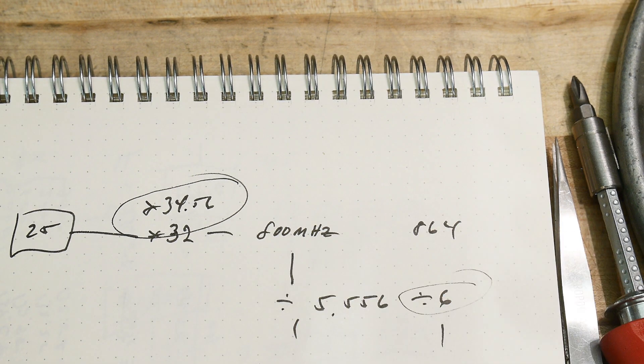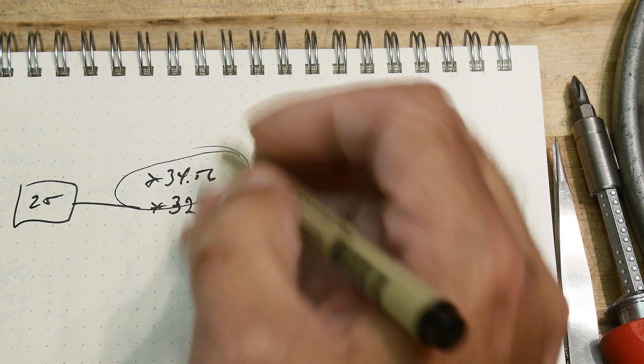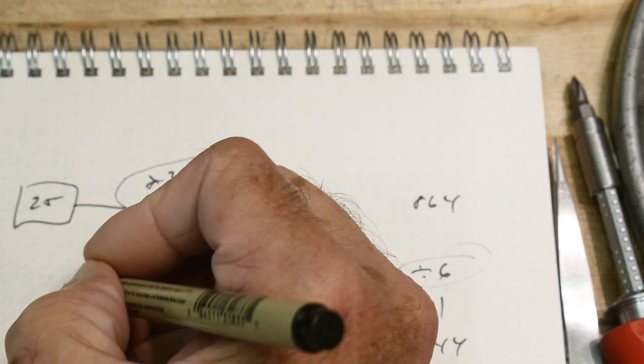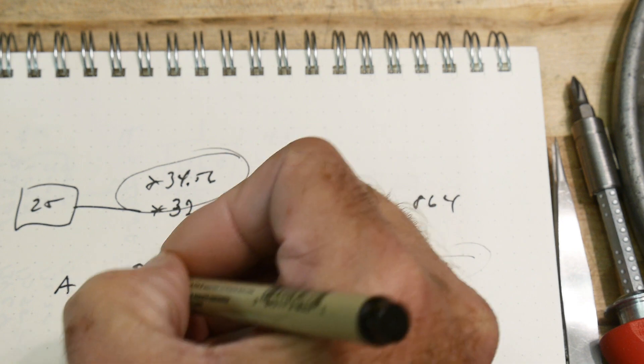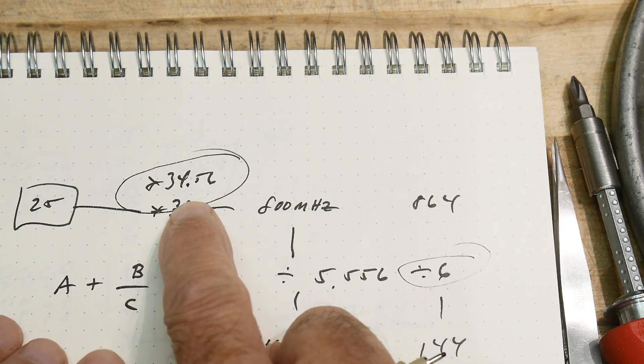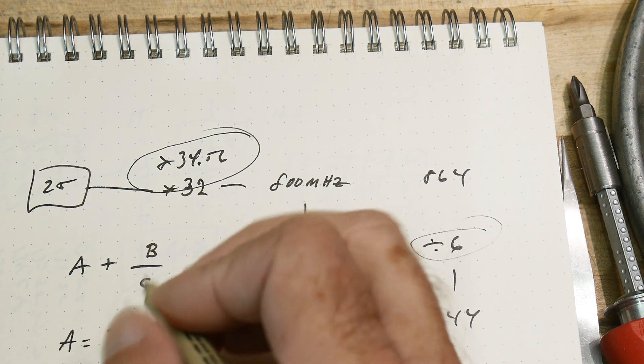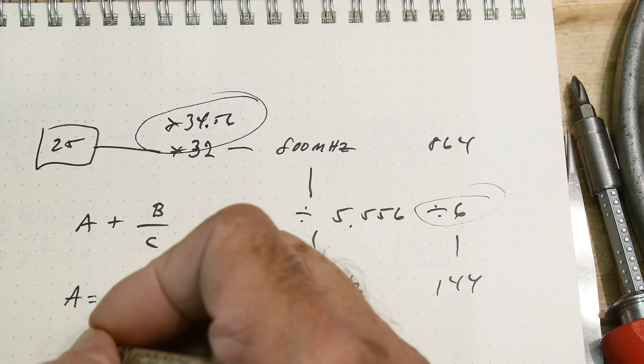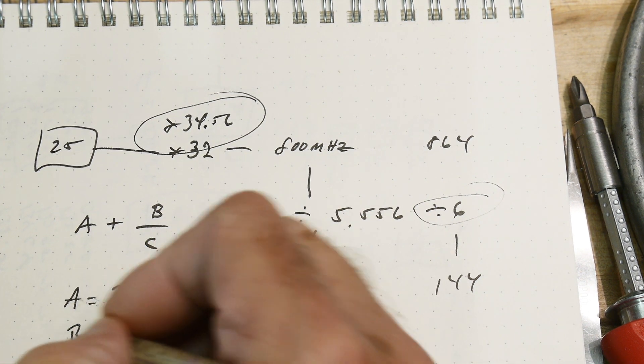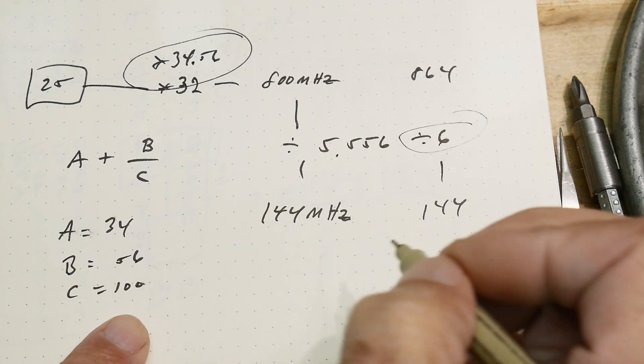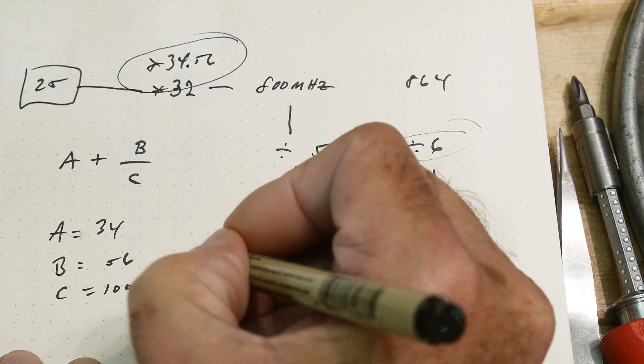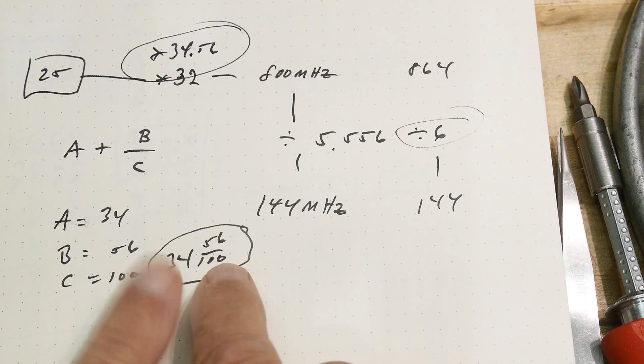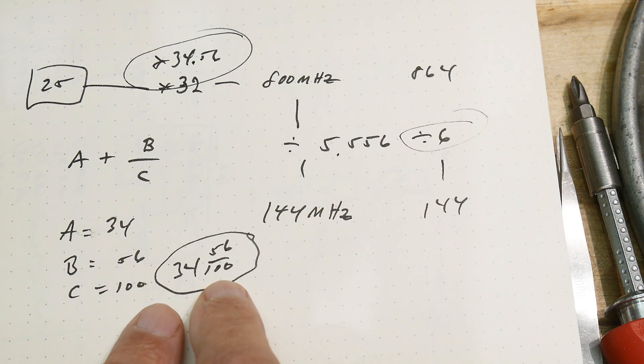Now, the way these chips work is they have registers, and the registers are not floating point registers, so you can't enter 34.56. What you can enter is A plus B over C, okay? So 34, let's see, so then A would equal 34, and B over C would have to equal 0.56. Well, I can just make that easy. If I make C equal to 100, then B just is equal to 56, okay? So I have 34.56, okay? And that is the same as 34.56. So that's what I have to enter into the Arduino code, okay?